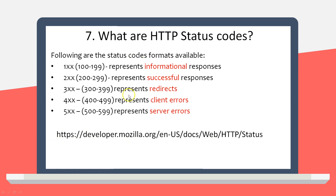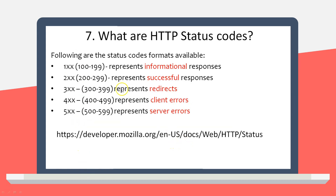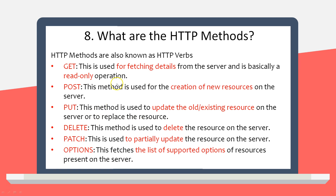Specific codes to know: 200 is success/OK; 201 is resource created (returned on POST or PUT); 400 is bad request; 401 is unauthorized (insufficient access); 403 is forbidden (not authorized to perform that operation); 404 is resource not found; 500 is internal server error; 502 is bad gateway (no response received from the server). You can visit the HTTP status codes reference URL to read about all commonly used codes.